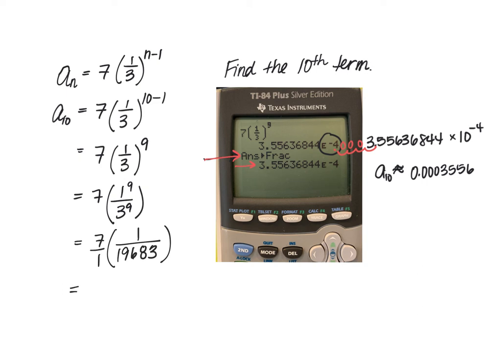And then just multiply the numerators and denominators. So we'll get a fraction of 7 over 19,683. And if this simplifies, you certainly would want to do so. However, 7 does not divide evenly into the denominator. So this would be our exact answer: 7 divided by 19,683. And this is going to be the 10th term of this particular sequence.